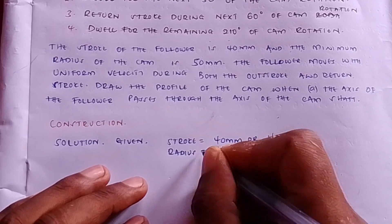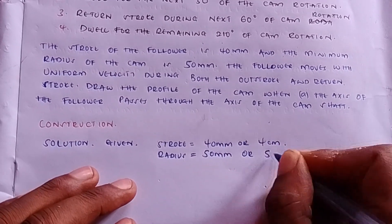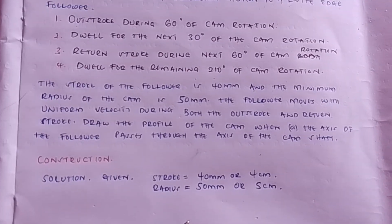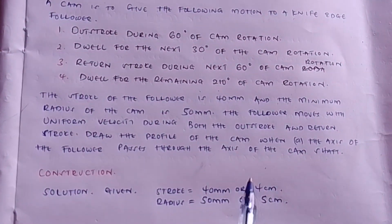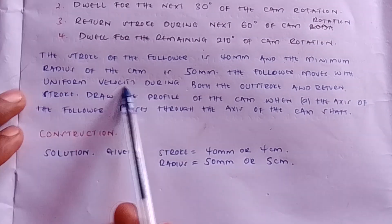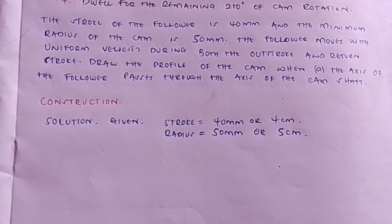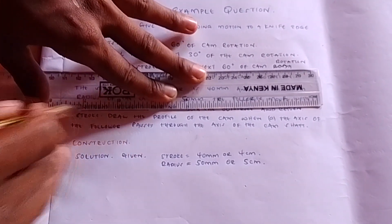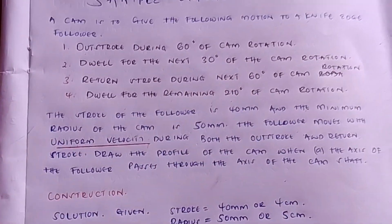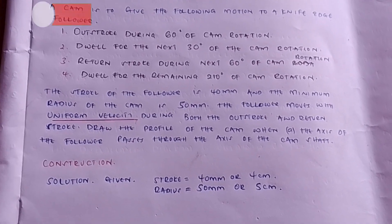Given that the radius of the cam is 50 millimeters or 5 centimeters. First draw the displacement diagram. The key point to keep in mind is that the follower moves with uniform velocity, so our displacement diagram will be of uniform velocity. Subscribe to my YouTube channel to see from previous videos how I have shown how to draw uniform velocity.